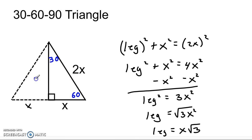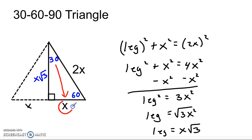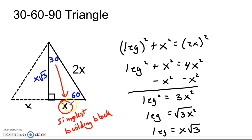Now we have the pattern for a 30-60-90 triangle: the sides are x, 2x, and x√3. What you want to keep in mind is you always look across from the 30-degree angle, because that's where x is — that's your simplest side. Think of it as your building block. If you know the side across from the 30, the hypotenuse is simply double it, and the other side is that same number times √3.